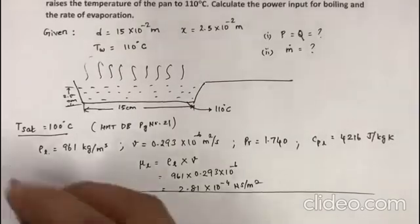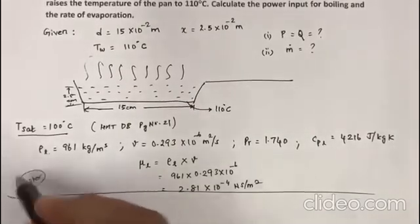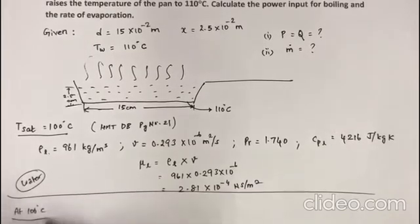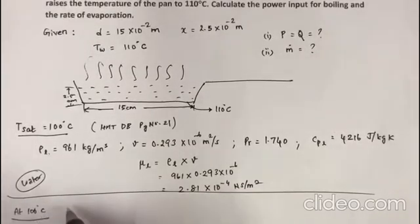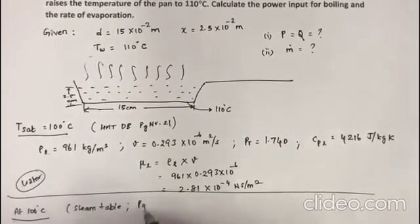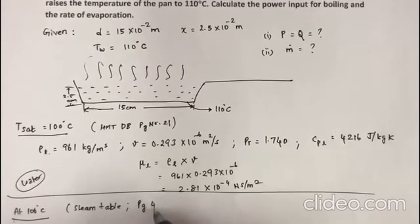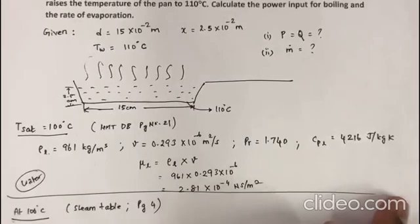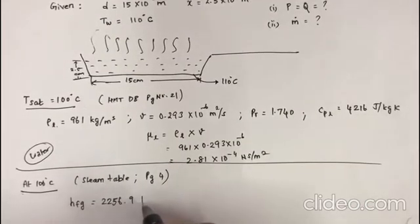So now this is what we have from the data book for water. Now this water has started to vaporize, so we need to find out the properties of vapor at 100°C. For this you need the steam table.